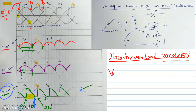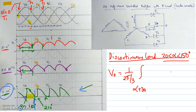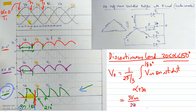The average load voltage V0 for discontinuous conduction is 1 divided by (2π/3), since 2π/3 is the single pulse period. The thyristor is fired at alpha plus 30 degrees, and conduction continues up to a maximum of 180 degrees. So the integral runs from alpha plus 30 to 180 degrees of Vm sin(omega-t) d(omega-t). Solving this yields V0 equal to 3Vm divided by 2π, multiplied by (1 plus cos(alpha plus 30)).